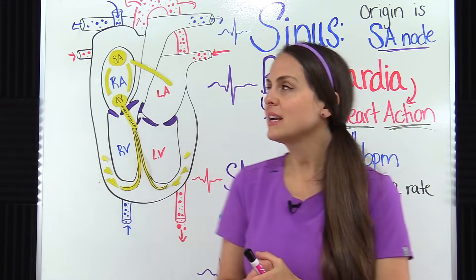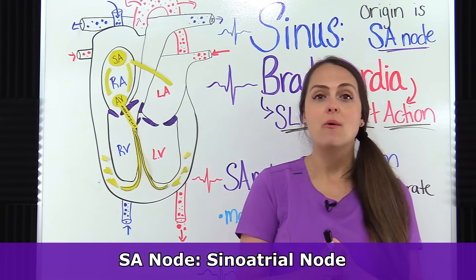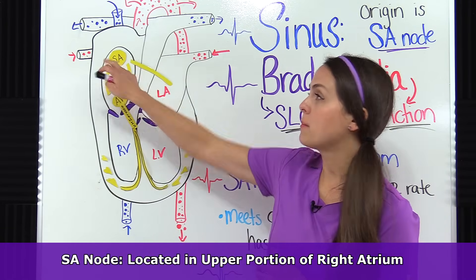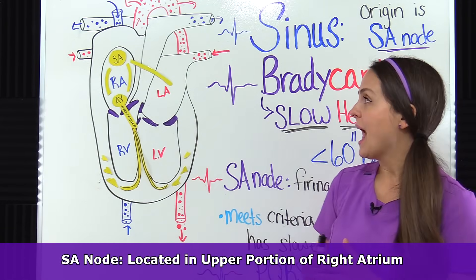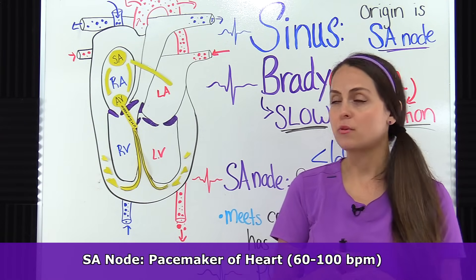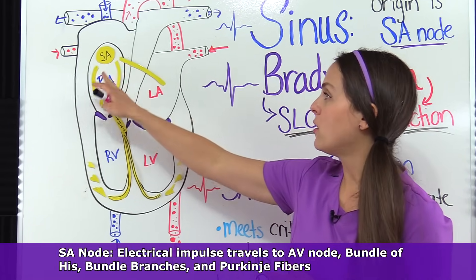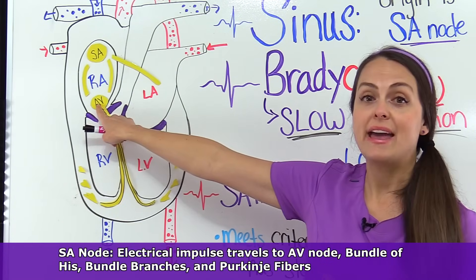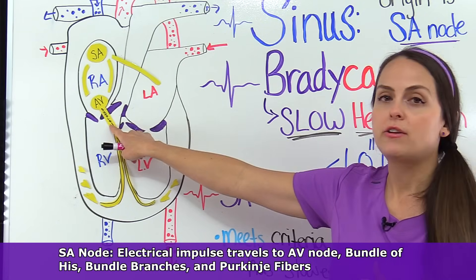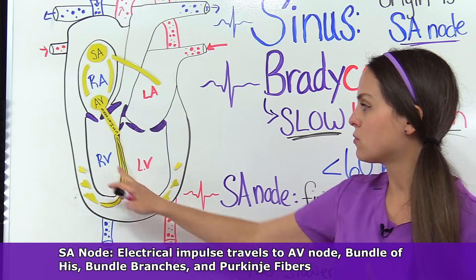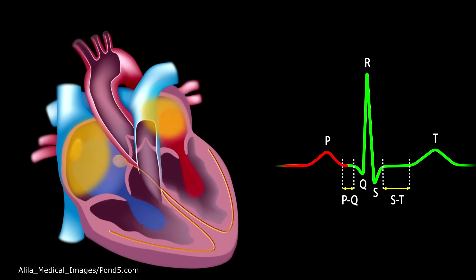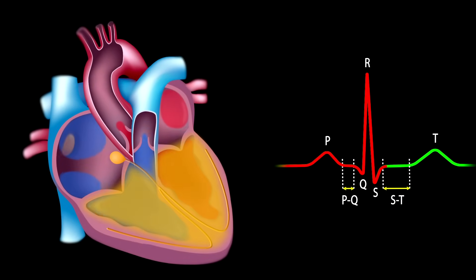The SA node is also known as the sinoatrial node, and it's our starting point of our electrical conduction system. It is found in the upper part of the right atrium and it's known as the pacemaker of the heart. Normally it should make your heart beat at about 60 to 100 beats per minute. It sends electrical impulses down through its internodal pathways to the AV node. The AV node delays the signal a little bit, then sends it down through the bundle of His, then the bundle branches — right and left — and then the Purkinje fibers. Whenever this process happens, it creates that PQRST waveform that you see on the EKG.